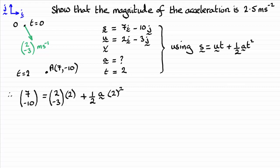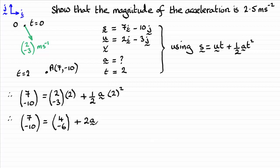Simplifying the right hand side: 7i minus 10j equals 4i minus 6j, and then we've got half of 4, which gives us 2, times the acceleration vector A. Rearranging to get A, I subtract the vector 4i minus 6j from both sides, leaving 2A, then divide by 2. That gives A equaling a half of the vector 3i minus 4j.